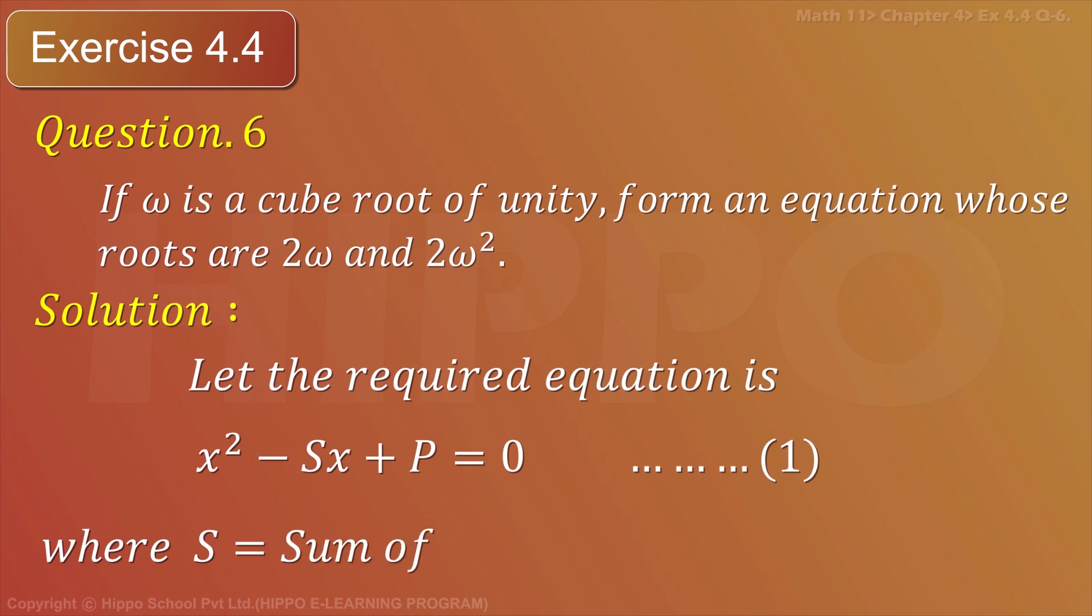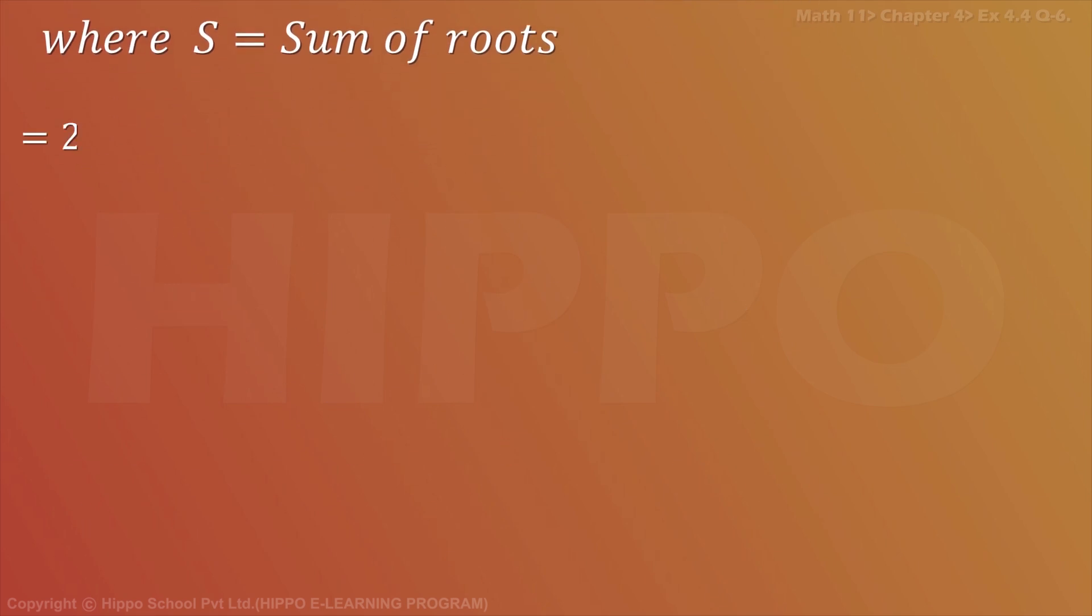Sum of roots equals to 2 omega plus 2 omega square equals to 2 times omega plus omega square. We know that 1 plus omega plus omega square equals to 0. Therefore, omega plus omega square equals to minus 1. So this equals to minus 2.